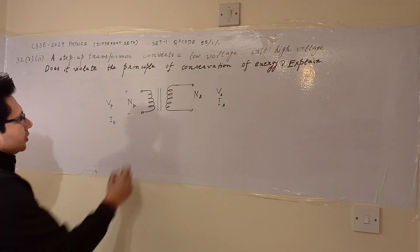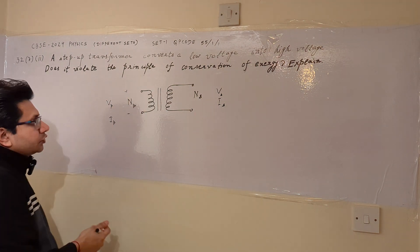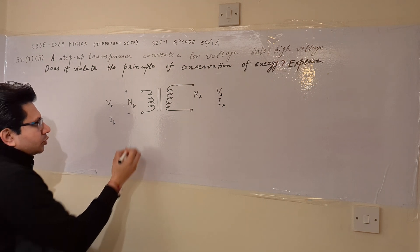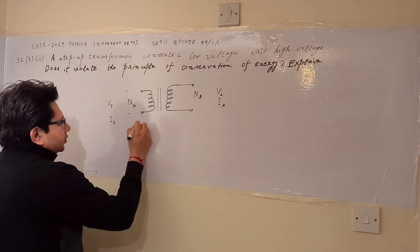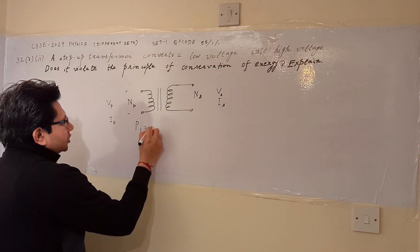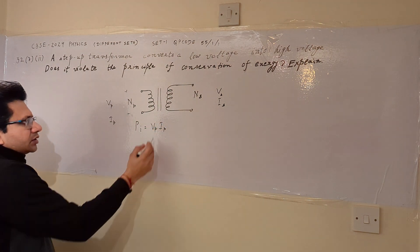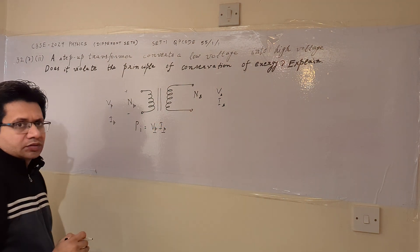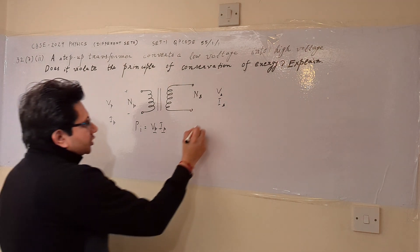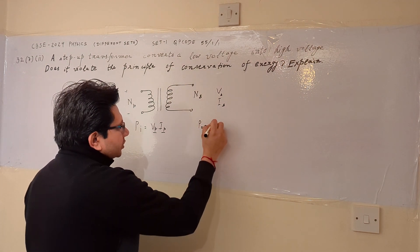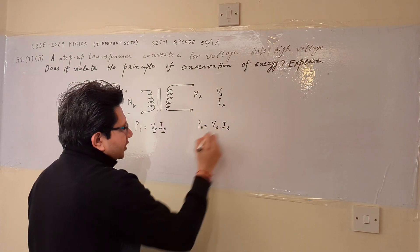Then according to the principle of the transformer, according to the working of the transformer, the power, the input power is equal to V sub T into I sub T. That is the primary voltage multiplied by the primary current. Similarly, the output power is V sub S into I sub S.